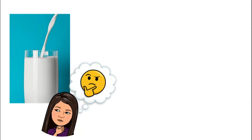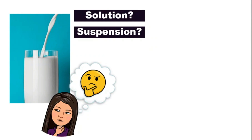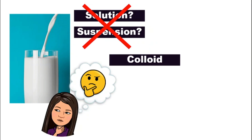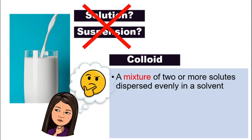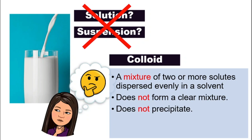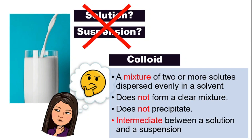Now I have a question for you. How about milk? Will milk be solution or suspension? Is it a solution? I don't think so, because if we flash a torchlight through the milk, it will not allow the light to pass through. How about suspension? I don't think so either. Why? Because if we leave the milk alone for a while, milk and water do not separate. So it is not solution and it is not suspension. We are going to look at a new word called colloid. Milk is a colloid. What is colloid? Colloid is a mixture of two or more solutes dispersed evenly in a solvent, and it does not form a clear mixture like solution. It also does not precipitate — meaning if we leave it alone for a while, they do not separate and it does not form two layers. It is in between solution and suspension.